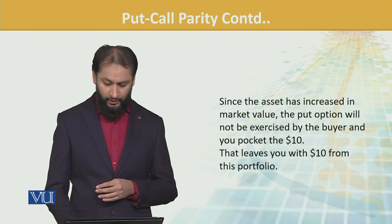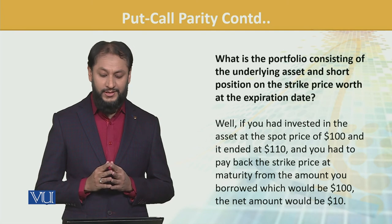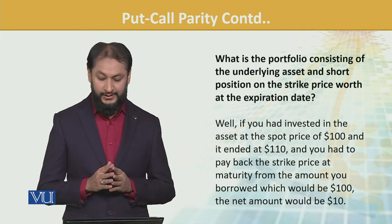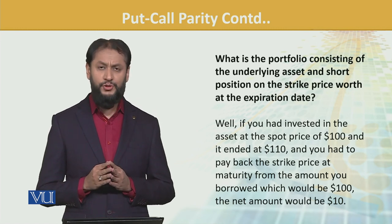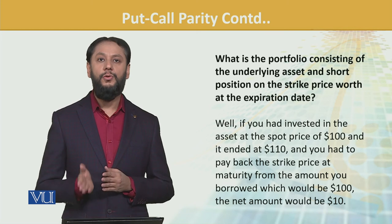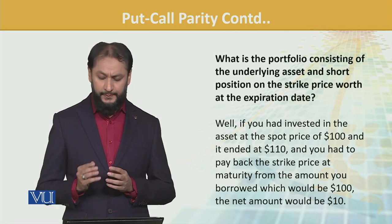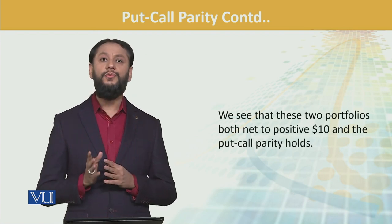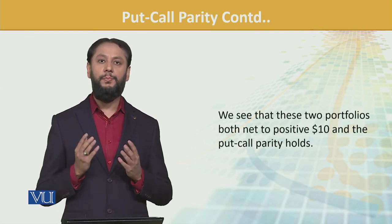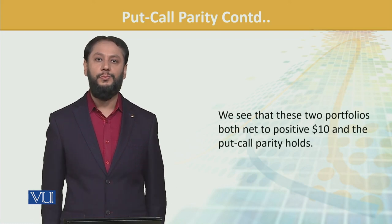Now let's move to the second part. What is the portfolio consisting of the underlying asset and a short position on the strike price? Well, if you had invested in the asset at spot price $100, it has now gone up to $110. And you had to pay back the strike price at maturity — the amount you borrowed — which is $100. Share price is $110 and the loan repayment is $100, so net we stand at $10. Both portfolios have an end result of $10. We conclude that put-call parity holds in this situation. We can shift any value and calculate it.